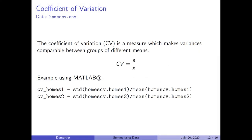The coefficient of variation is a measure that makes variances comparable between groups with different means. The variance depends on the units of observation, making it difficult to compare variances across groups. For example, homes in Beverly Hills are more expensive, so you would expect a larger variance — but that does not mean the spread around the mean is larger than in Indianapolis. The coefficient of variation corrects for this.